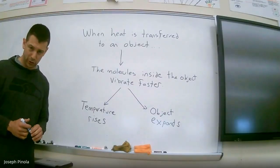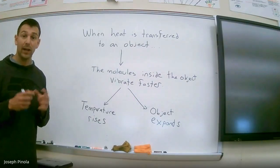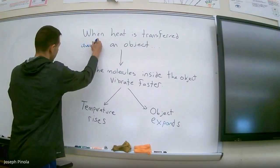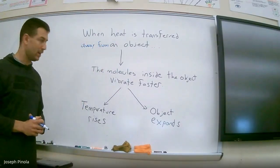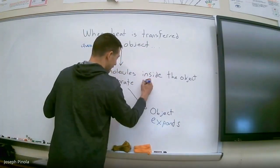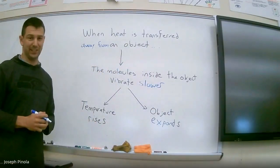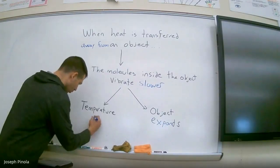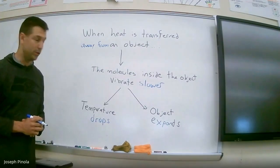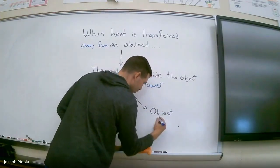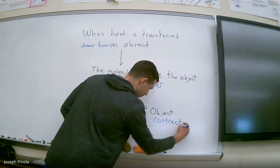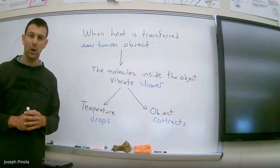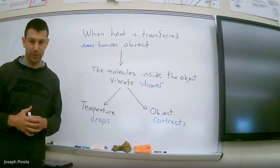Did you know that the reverse is true too? If I had an object like the metal ball and put it inside a container of ice for a long time, heat would be transferred away from the object. That would cause the molecules inside to vibrate a bit slower, decreasing the average kinetic energy. Because the molecules vibrate slower, the temperature would drop and the object would no longer expand — instead, the object would contract. Heat can be added to an object causing its temperature to go up and it to expand, or heat can be removed from an object causing its temperature to go down and it to contract.